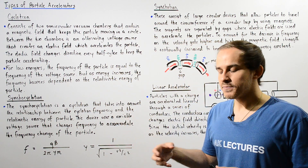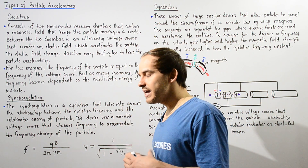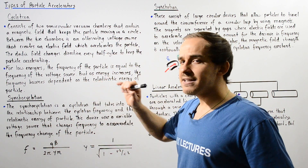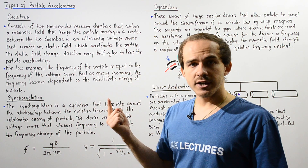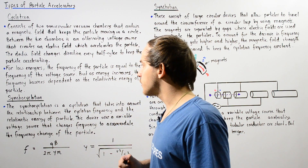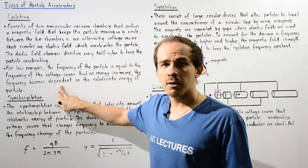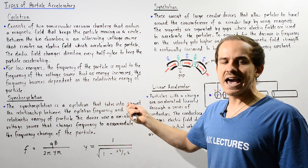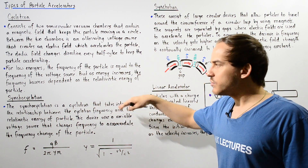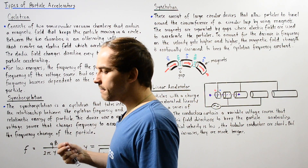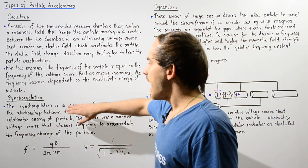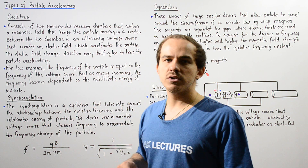What happens if we want to accelerate that particle to a very high velocity? As the velocity increases, the energy increases, and at high energies, the frequency and the radius of curvature of the particle become dependent on the relativistic energy and relativistic velocity of that particle. That's exactly why we need to build a different type of accelerator to accommodate for this relationship — and we build the synchrocyclotron.